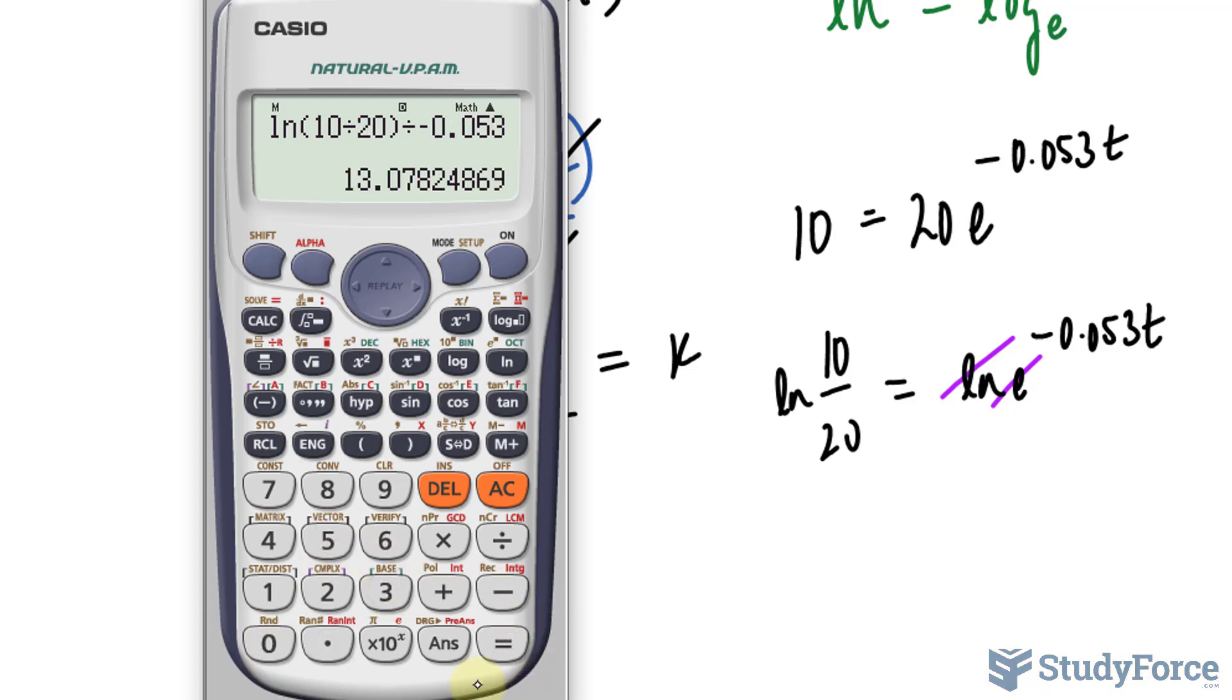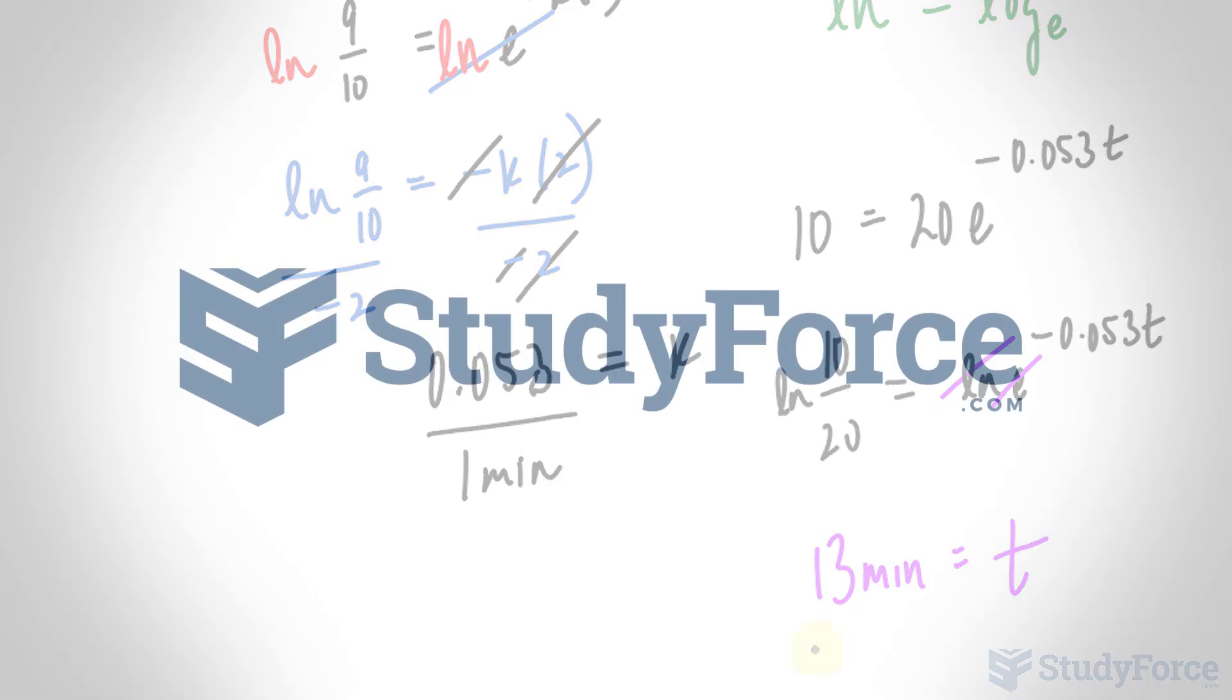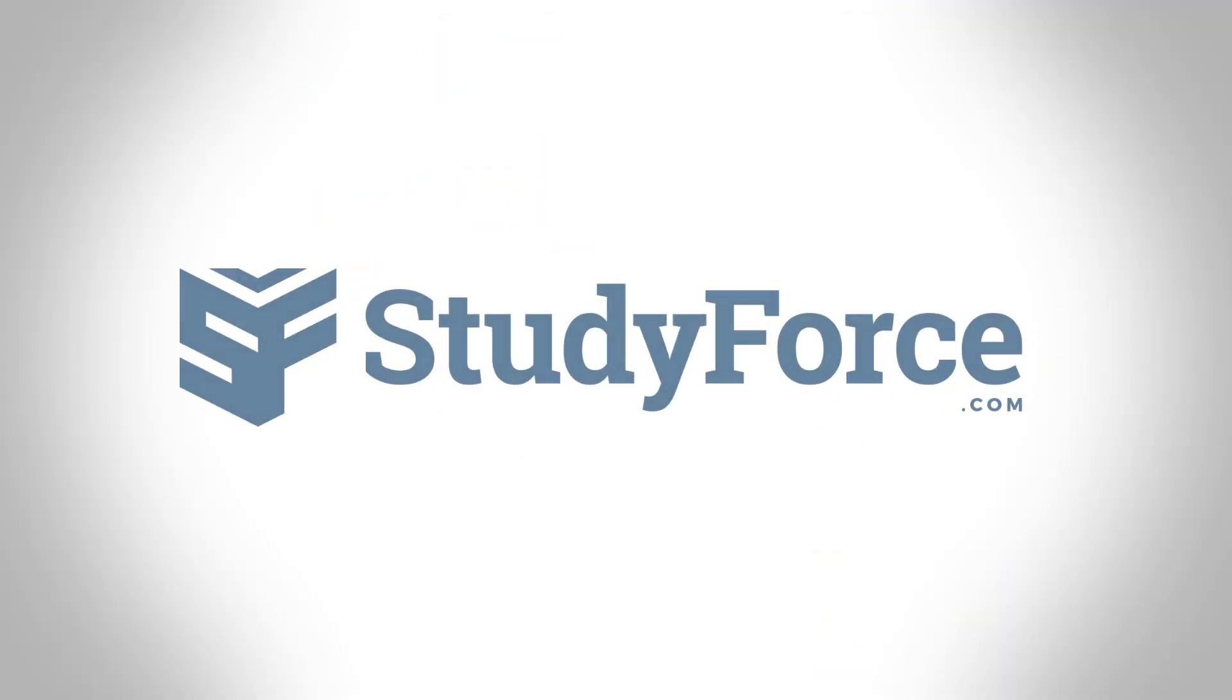This means that it will take 13 minutes for the tea and the coffee to be only 10 degrees Celsius difference in temperature. And there you have it. Now you know how to apply Newton's law of cooling.